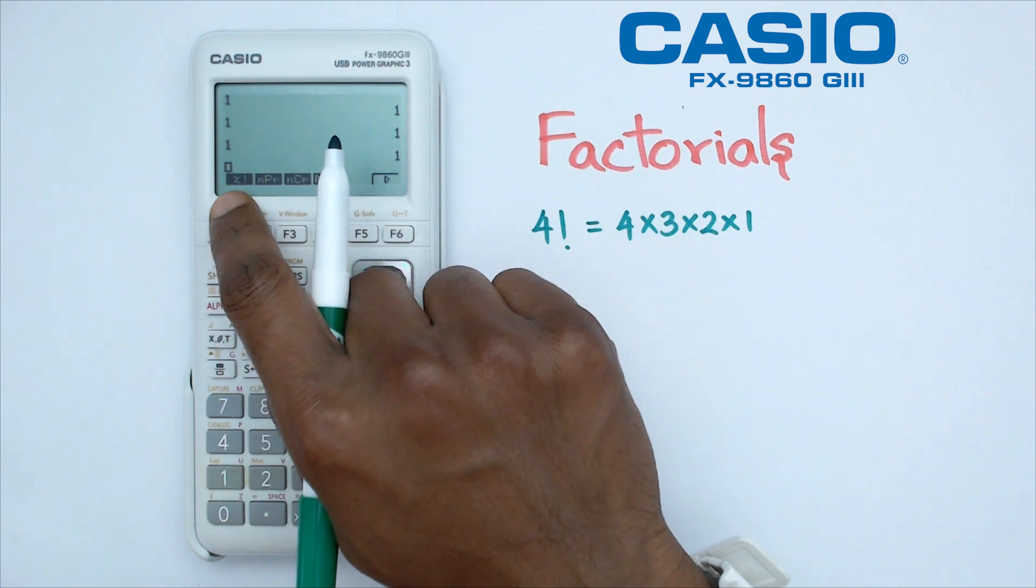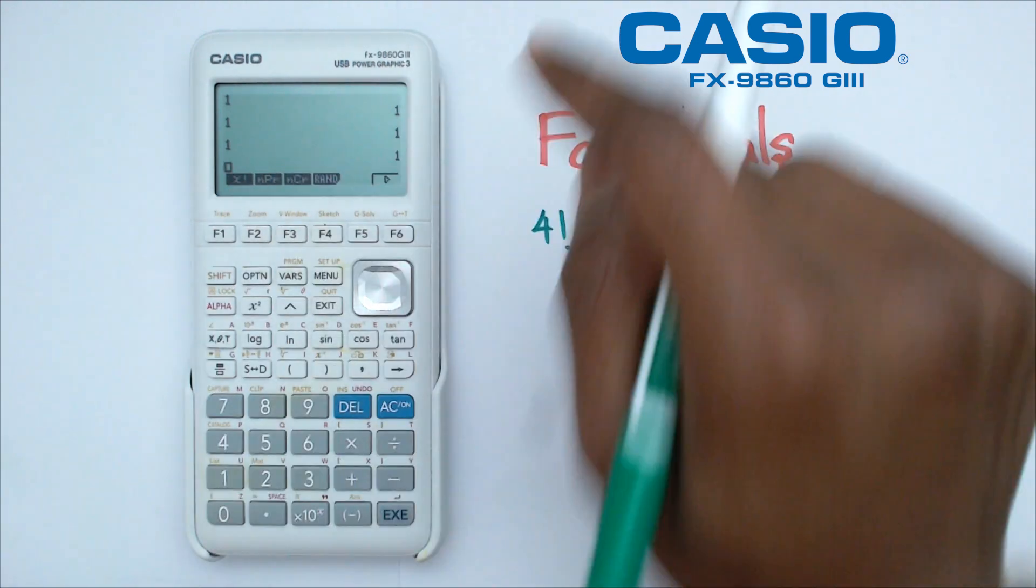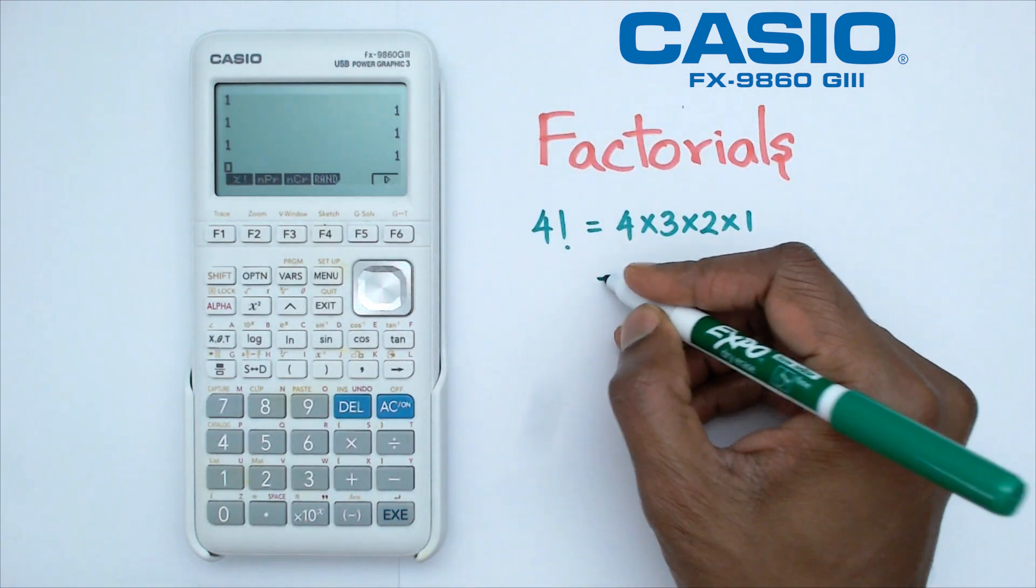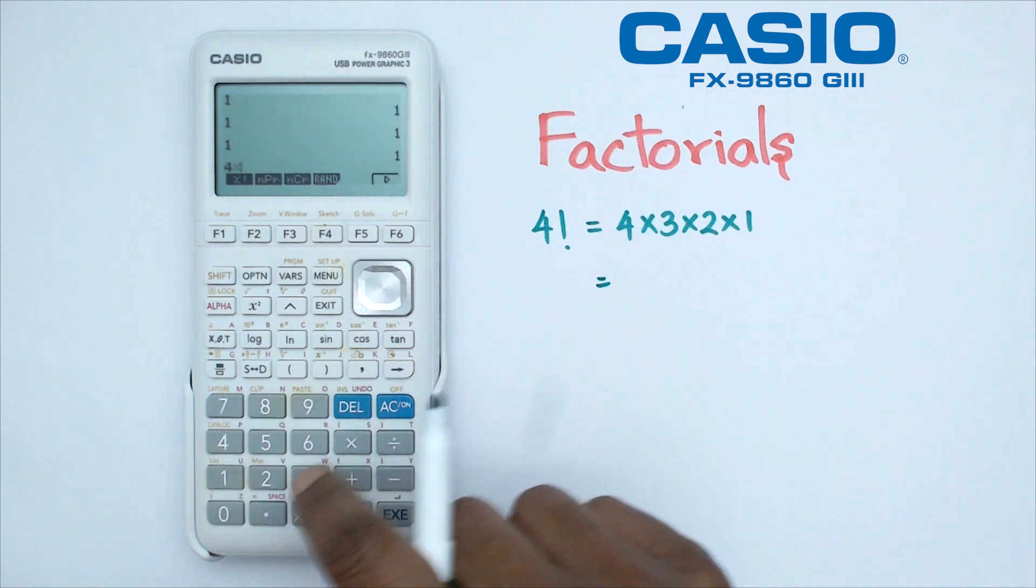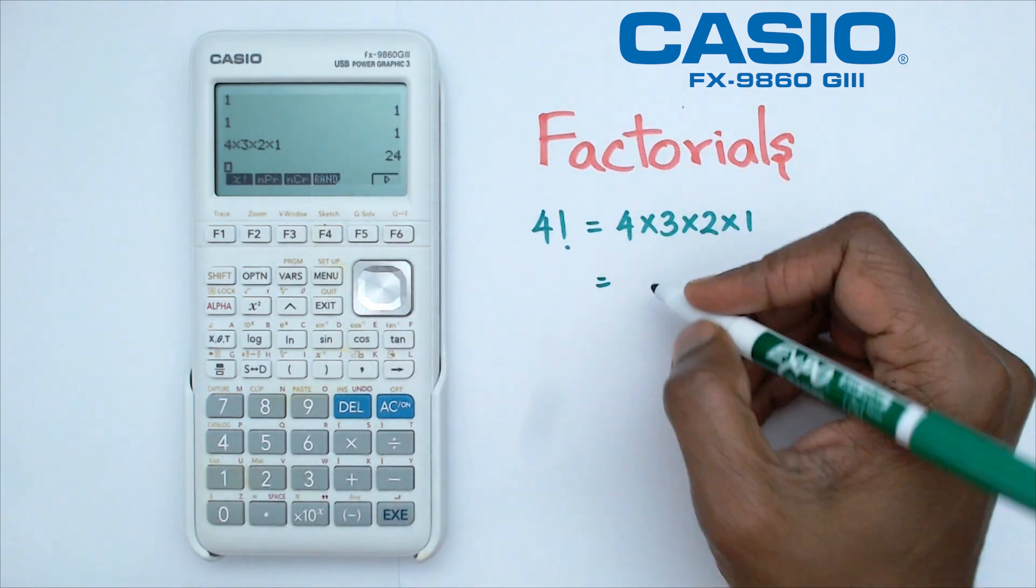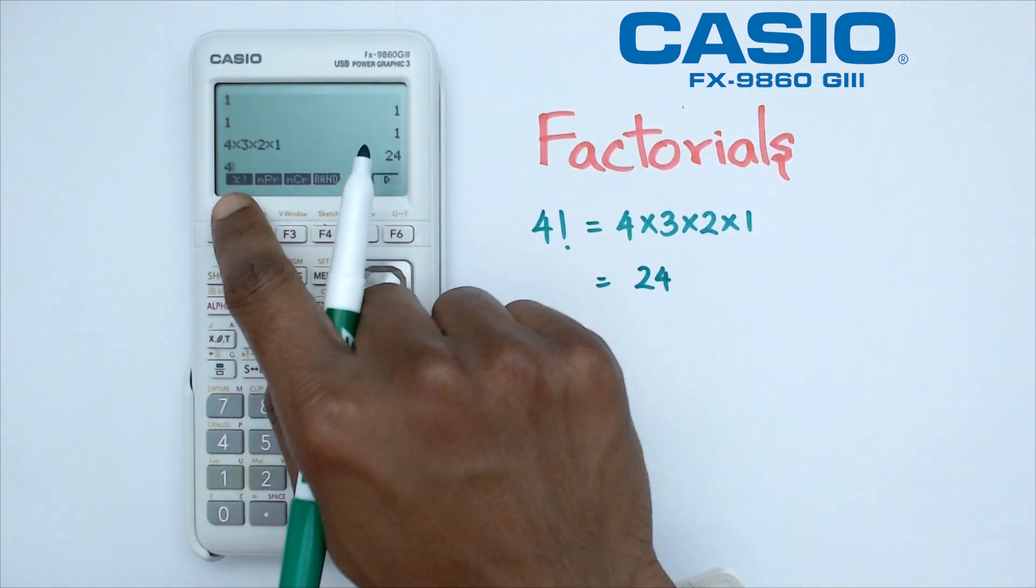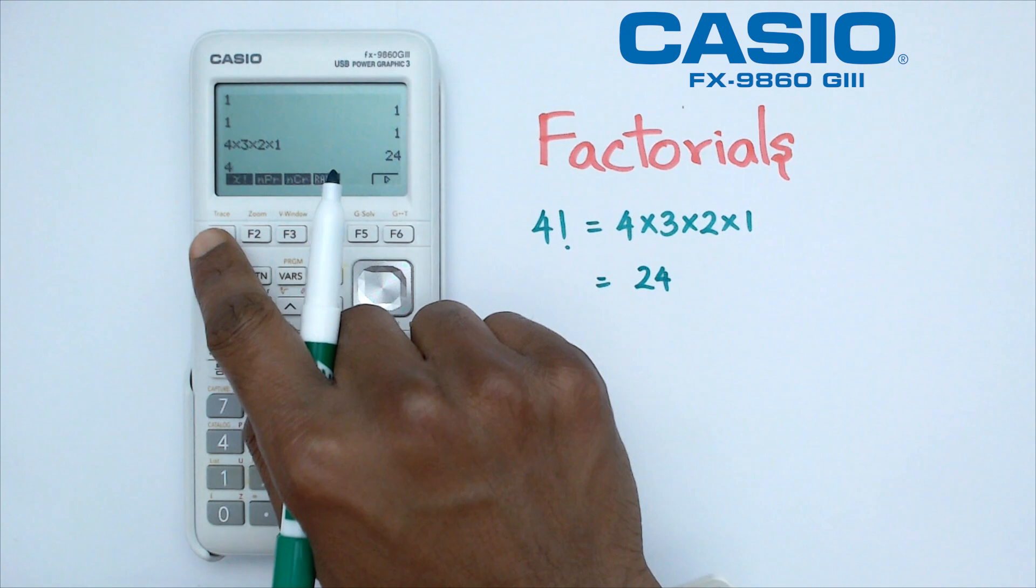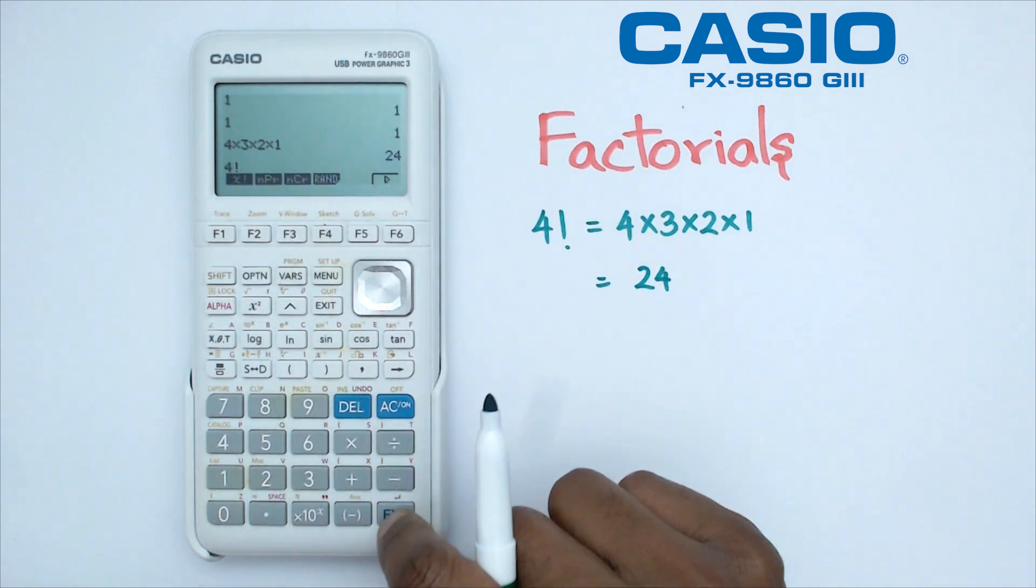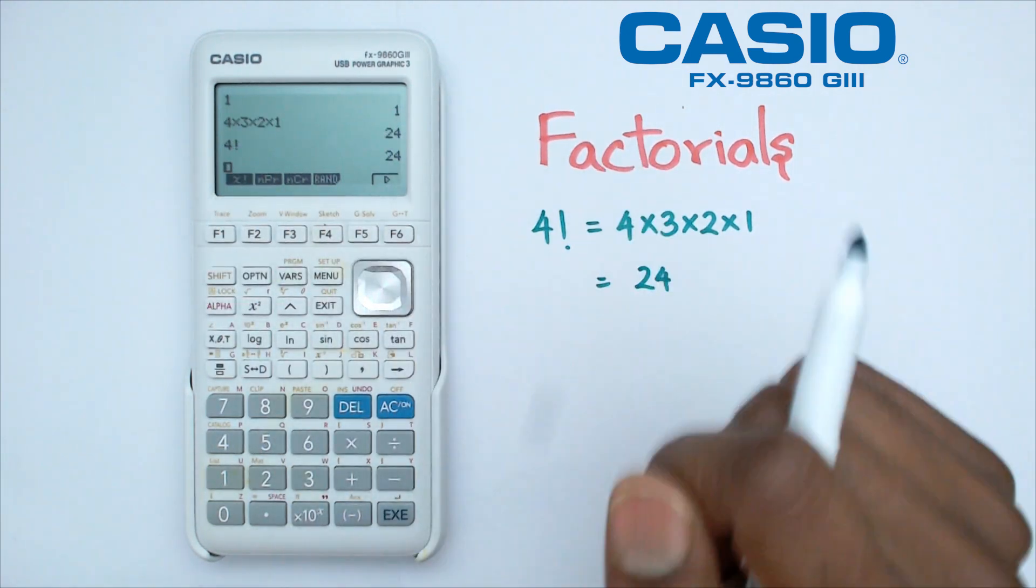And as you can see, the factorial button is there, the X exclamation mark. So we now know that 4 times 3 times 2 times 1 is 24. So the shortcut way of doing this would be going 4 and we're going to click on the X factorial. So it's F1 there. We're just going to put that as 4 factorial, and when we do that, we get 24.